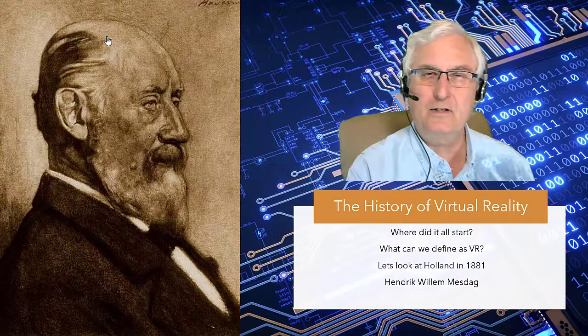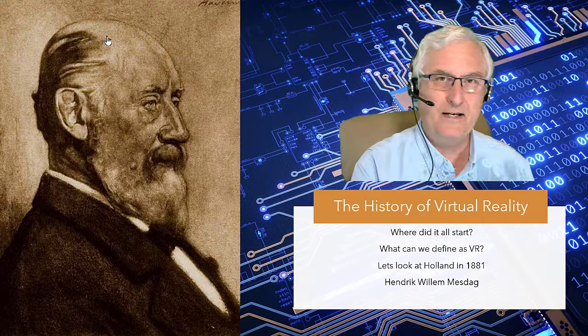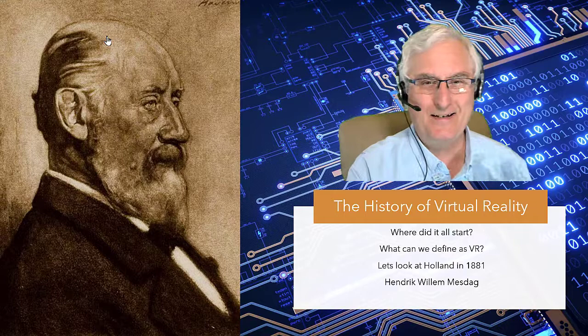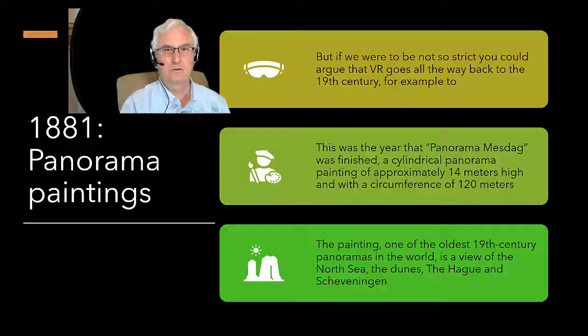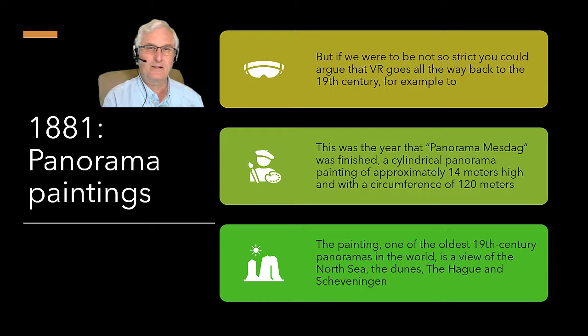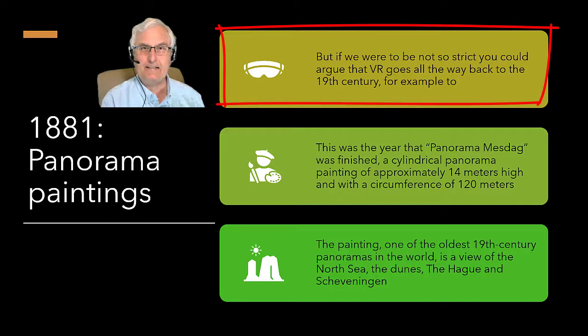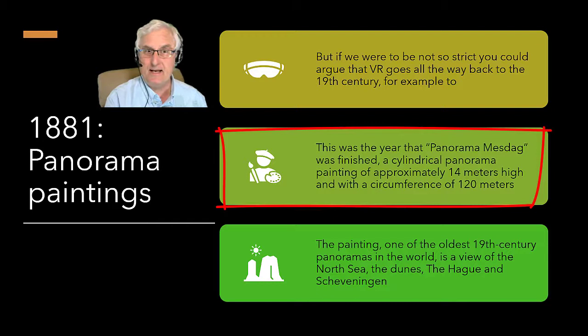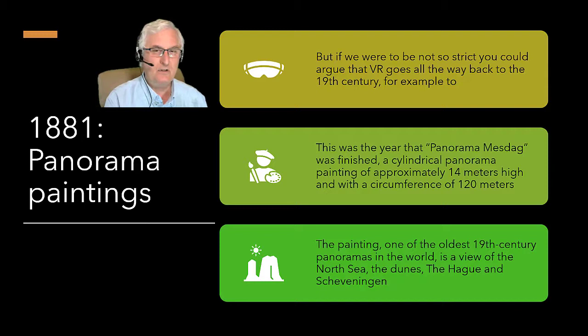Now let's look at the history of virtual reality. Where did it all start? What can we define as virtual reality? Let's look at Holland in 1881. The man's name was Hendrik Willem Mesdag. If we were not so strict, we could argue that virtual reality goes back to the 19th century. This was the year that the Panorama Mesdag was finished. This is a very large painting.